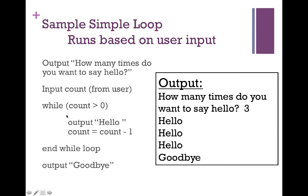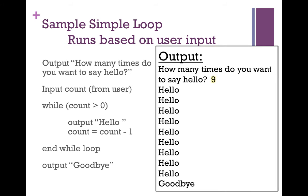We come back up and check our condition again. 1 is greater than 0, so our condition is true and we pop back into our while loop, outputting hello again. Now we take 1 minus 1, which is 0. We come back up and 0 is not greater than 0, so we exit out of our while loop and print goodbye. This program is very flexible — it can run however many times the user wants to say hello. In this example, the user said hello nine times, so our loop runs nine times and then exits and prints goodbye.